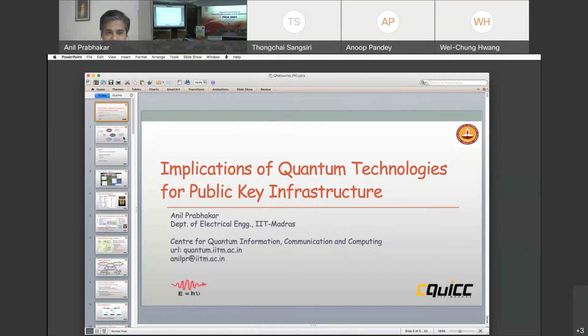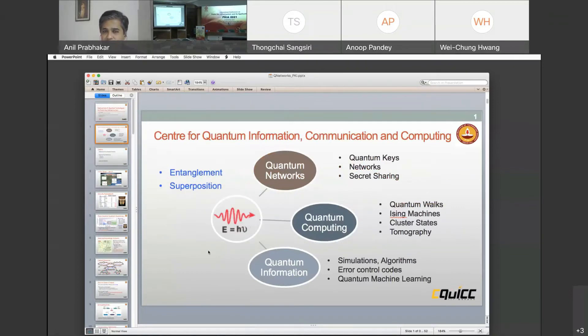A brief introduction. I represent the Center for Quantum Information Communication and Computing or QUIC or CQUIC at IIT Madras. A lot of our work is done around photonics. You will see the E equals H nu Einstein's equation out here. We rely on three different verticals on quantum networks, quantum computing, and quantum information. Two of these or actually all three verticals work together and have an effect on the topic of our discussion today.